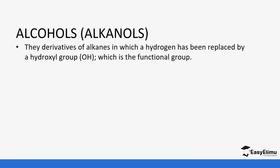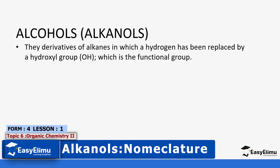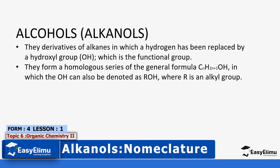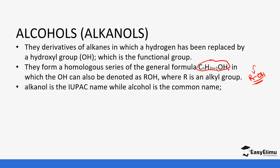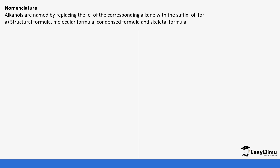Alkanols, commonly known as alcohol, are derivatives of alkane in which a hydrogen has been replaced by an OH or hydroxyl group. They form a homologous series with the formula ROH. We usually use a hyphen when denoting this, especially in qualitative analysis for organic chemistry. The alkanol is the IUPAC name while alcohol is the common name.